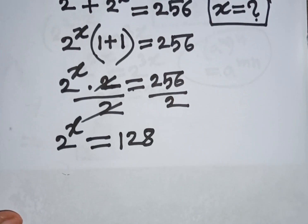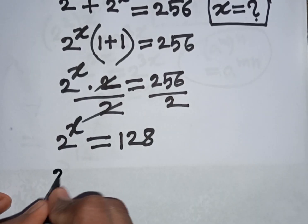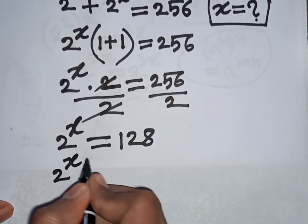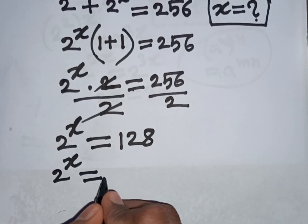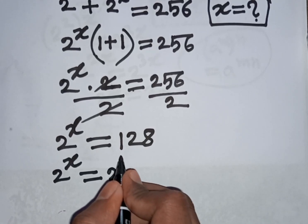Now we have 2 power x is equal to 128, is same as 2 power 7.